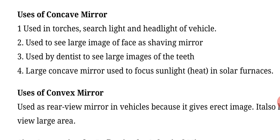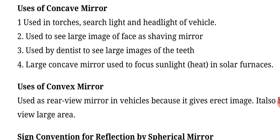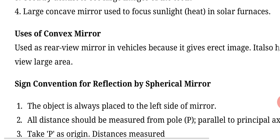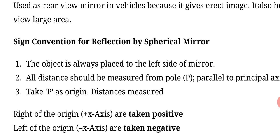Uses of convex mirror: used as rear view mirror in vehicles because it gives erect image. Rear view mirror to see behind gives upright image. It also helps view large area, has capacity to capture large area. Now we talk about sign convention of reflection by spherical mirror.